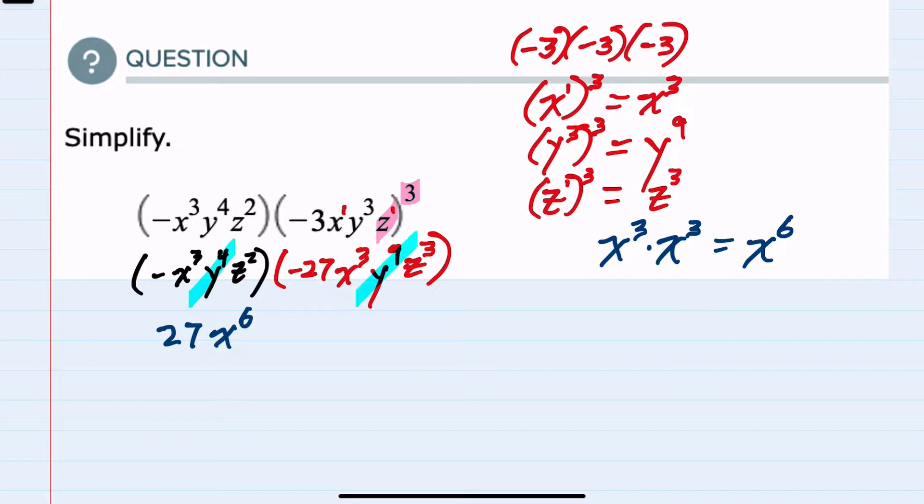Moving to the y's, we're multiplying common variables, this time raised to different exponents, y4 times y9. We simplify by keeping the variable and adding the exponents, so y13.